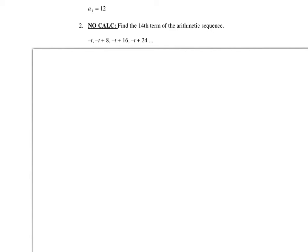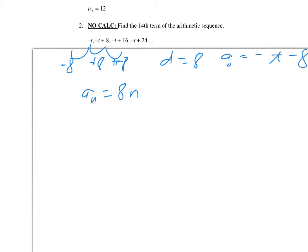For number two, we need to find the 14th term in the sequence. I notice the pattern is plus 8, so it's going to be an arithmetic sequence. I'm going to say a sub n equals 8n, and then subtracting 8 going backwards, my a sub 0 would be negative t minus 8. It's asking for the 14th term, so just plug in 14 for n.